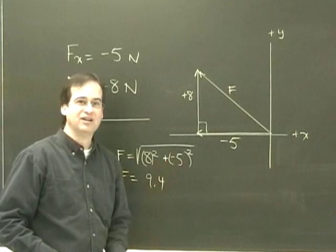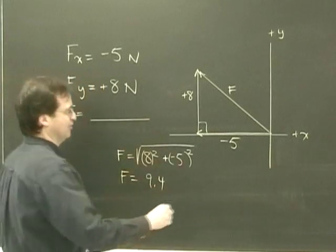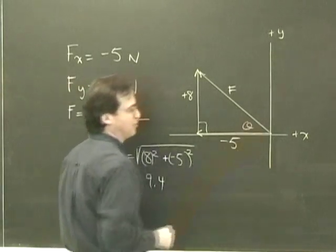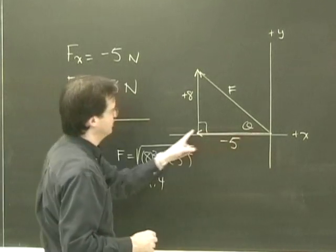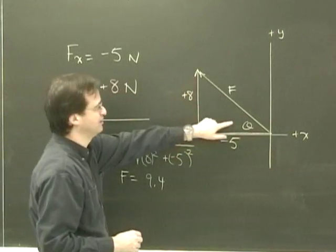I now have the magnitude of the vector, and what I want to do now is find the angle. So this is the angle I'm going to look for right here. It's going to be west so many degrees north, and I need to get that angle.